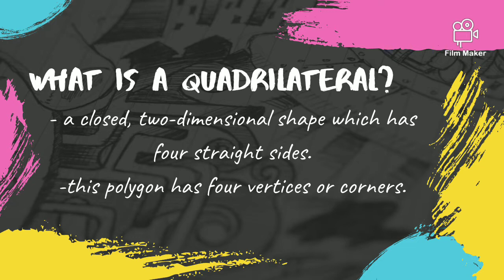What is a quadrilateral? In geometry, a quadrilateral can be defined as a closed two-dimensional shape which has four straight sides. This polygon has four vertices or corners.